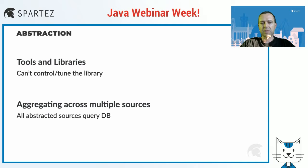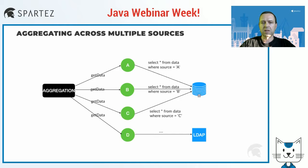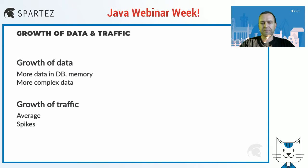Another category I call abstraction. Tools and libraries simplify things for the programmer, but as a result might hide something, and it might be hard or even impossible to tune and get everything right. Another example is aggregating across multiple data sources. Let's say we have four data sources — A, B, C, and D — all providing a Java interface with a getData method, and we need to aggregate data across those sources. As you can see, we end up calling the same database table three times, even though technically we could fetch the data in a single call.